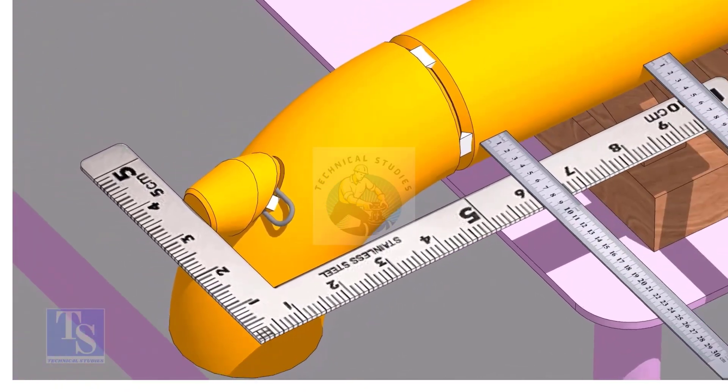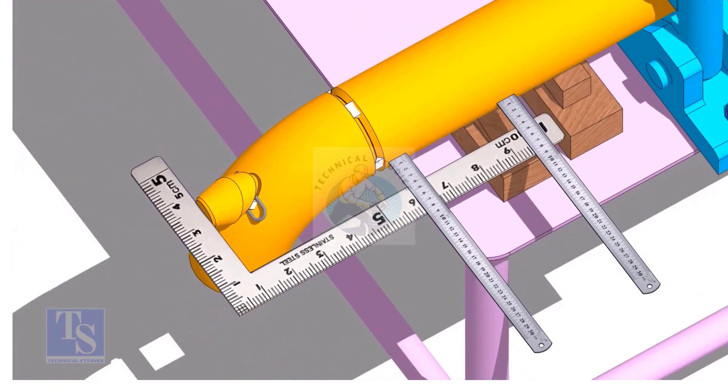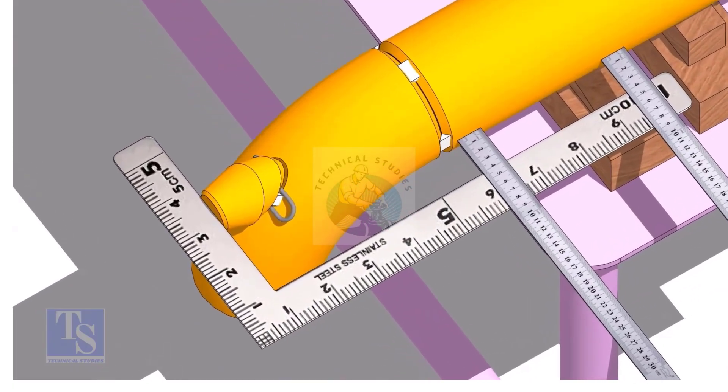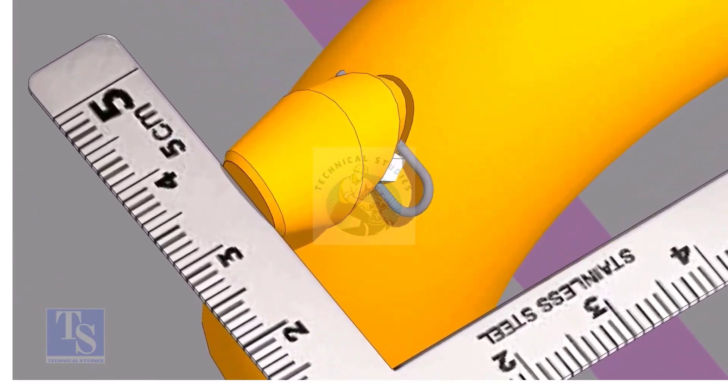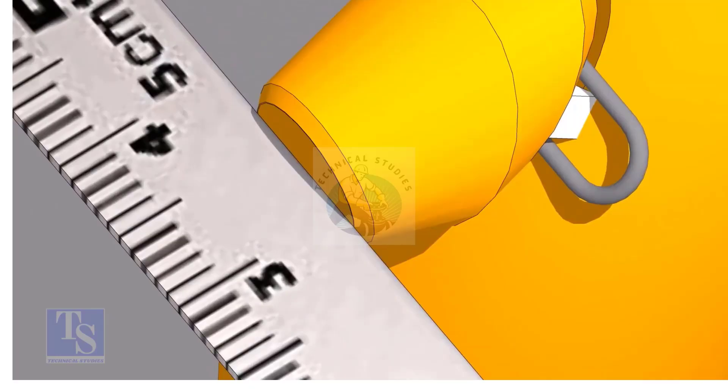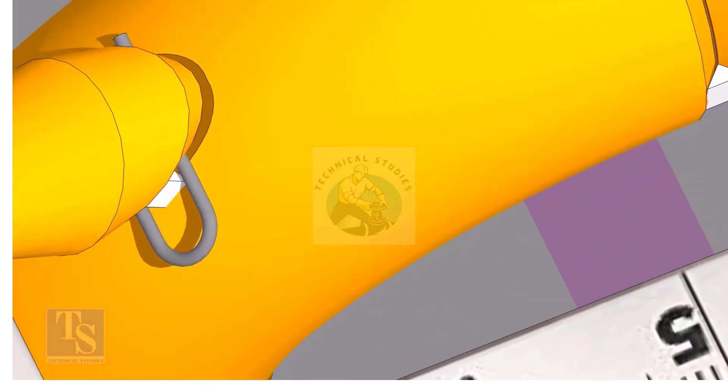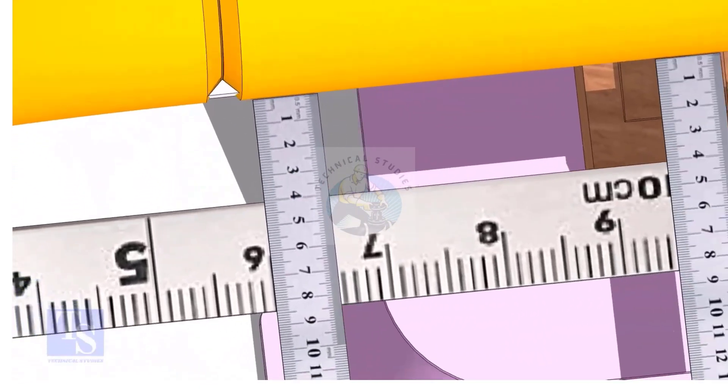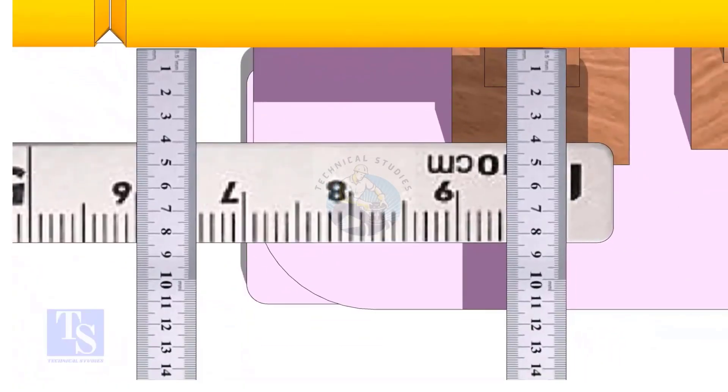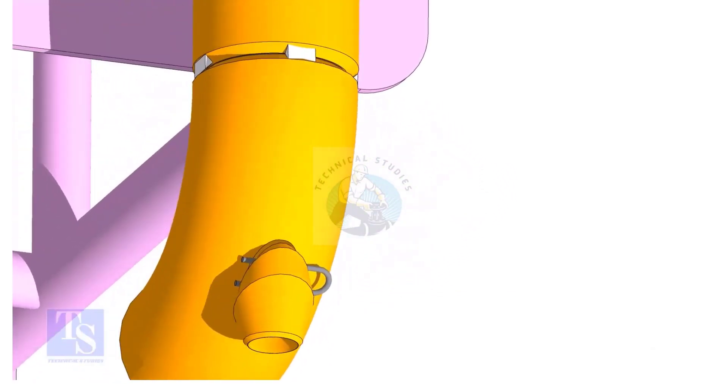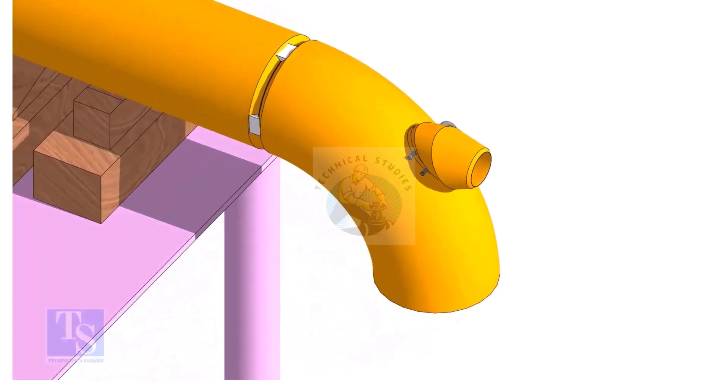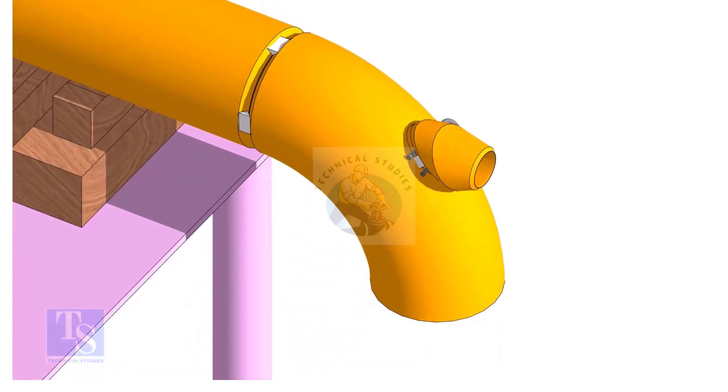Make the elbowlet face square to the side of the pipe. Tack weld on the opposite side.